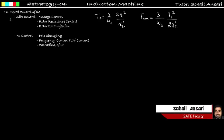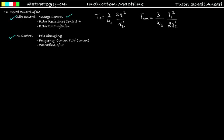The two ways of controlling the speed of induction motor are: first, slip control, and second, Ns control. In slip control, we divide this into three parts: first is voltage control, second is rotor resistance control, and third is rotor EMF injection. These three types of speed control we will see in this lecture.